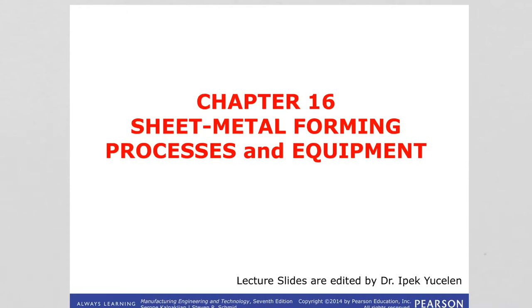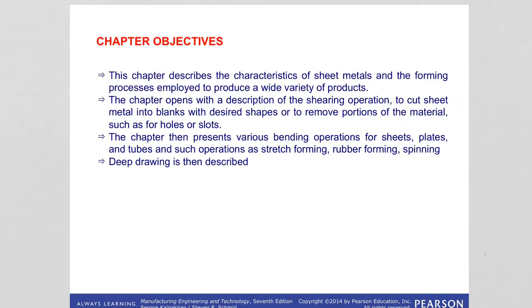In chapter 16 we're going to learn about sheet metal forming processes. We will describe the characteristics of sheet metals and forming processes employed to produce a wide range of products. We will start with explaining what shearing operation is, then continue with bending operations, and conclude the chapter with deep drawing technique.